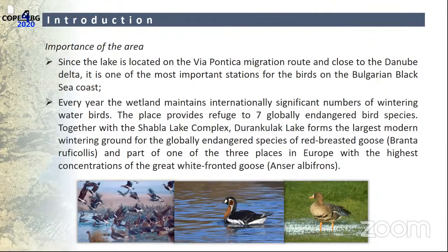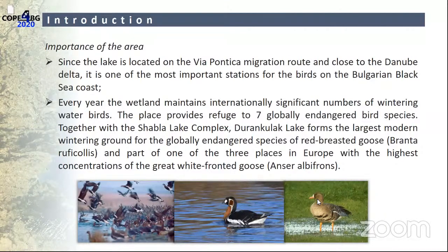The lake is one of three places in Europe where almost the entire population of certain bird species can be observed. The habitat types present in Durankulak include various wetland habitats. Open water areas are mainly used by species for feeding and resting. The two pictures shown illustrate the species that inhabit these habitats.